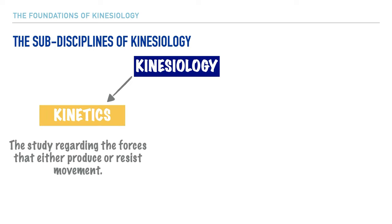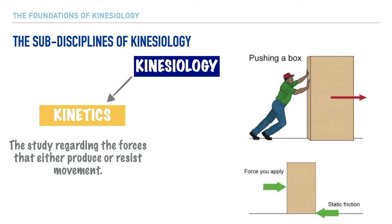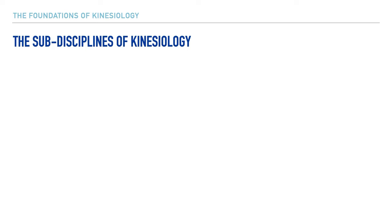For example, let's imagine we have a gentleman who's moving and he's having to push a box. Under the discipline of kinetics, we could determine how much friction or resistance exists in actually moving the box, and as a result we could calculate how much force he should apply to the box in order to physically move it.